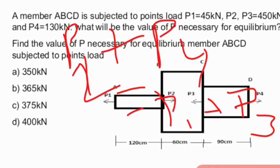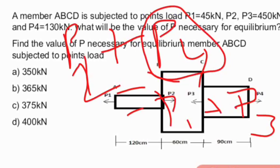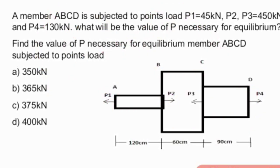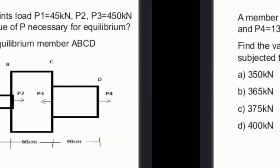We have P1, P3, and P4 values, so we can find P2. Using the equation P2 + P4 = P1 + P3 and substituting the given values, the answer for P2 is 365 KN. Equating opposite forces, option B is the right answer: 365 KN.